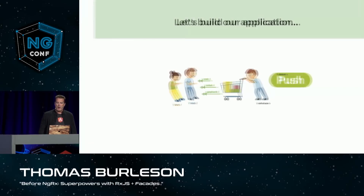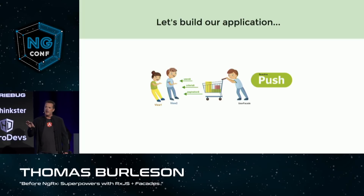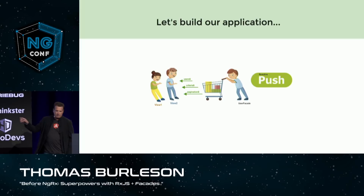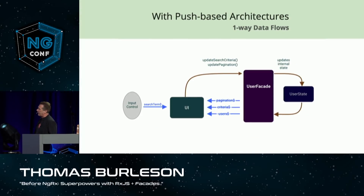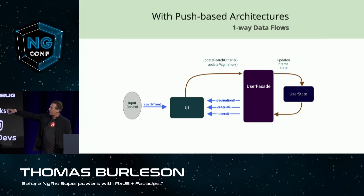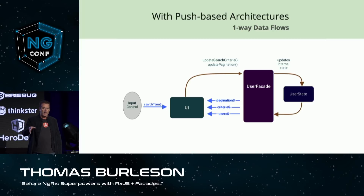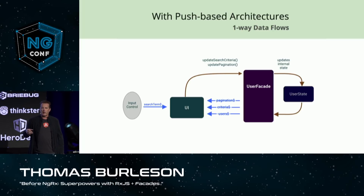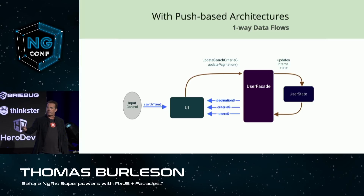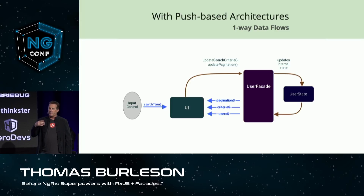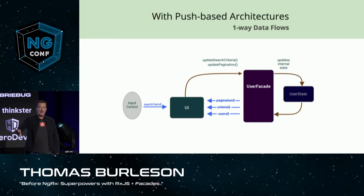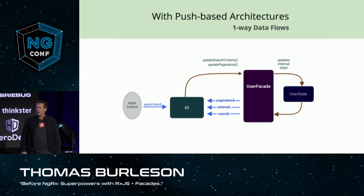Let's take a look at a better approach. This idea — to not just use RxJS but to use it to build push-based architectures — is really a paradigm changer. With push-based architectures, when the search term criteria or pagination changes, we call a method on the user facade. The facade makes internal changes, updates its state, and probably triggers a reload. Three streams come out: pagination, criteria, and users. These are long-lived streams the UI uses. Regardless of what happens inside the facade or on the server, when the user state changes, these streams re-emit the current data. This is a very powerful concept.